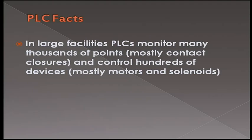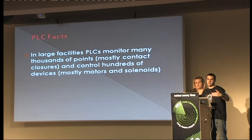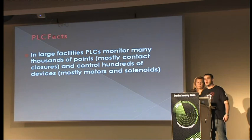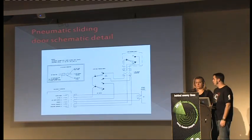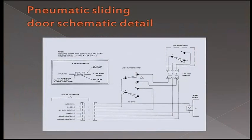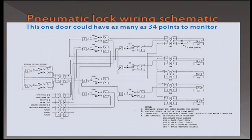Within a large facility, these PLCs may monitor thousands of points. With a prison door, it can be controlling the solenoid that controls the lock state — is it locked or unlocked? But then it's also going to monitor the door, like how far open or closed a sliding door is. On this particular schematic, you can monitor up to 34 points on that door. A lot of times, PLCs are implemented to cut down on hardware costs — conduit and actual wiring. You can run all these wires back to central control from every single point, or run them to a PLC and run one wire from a PLC back to central control.